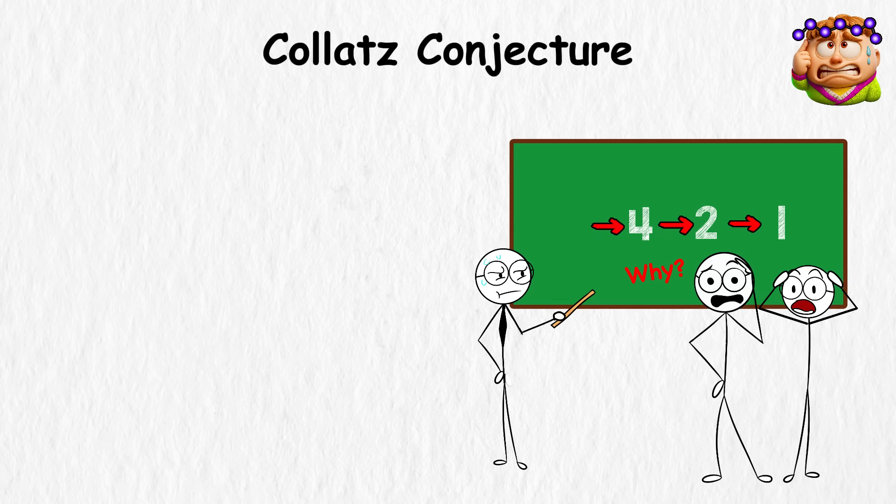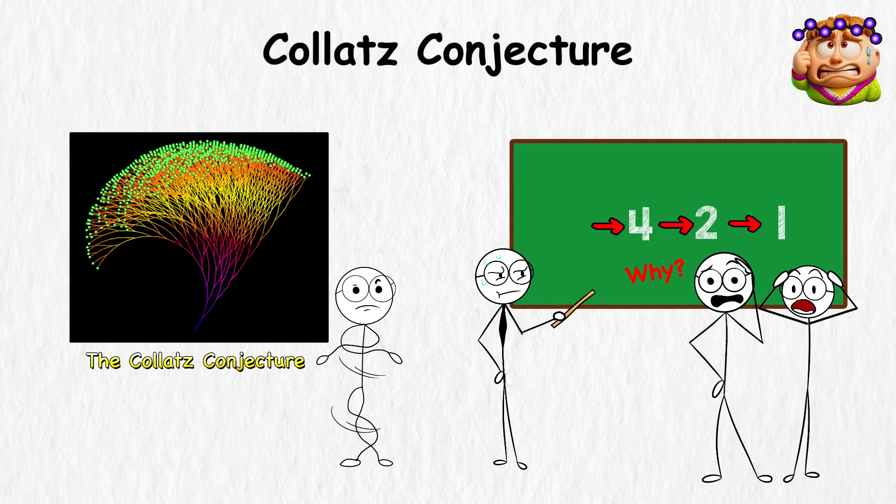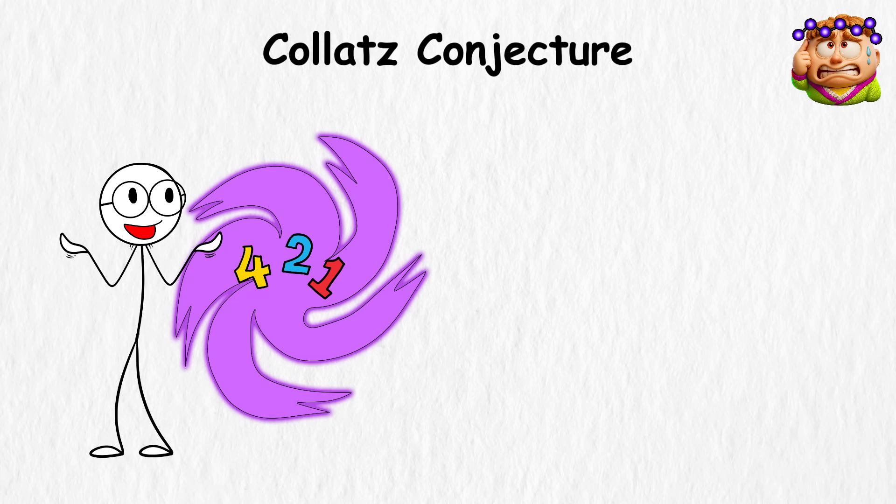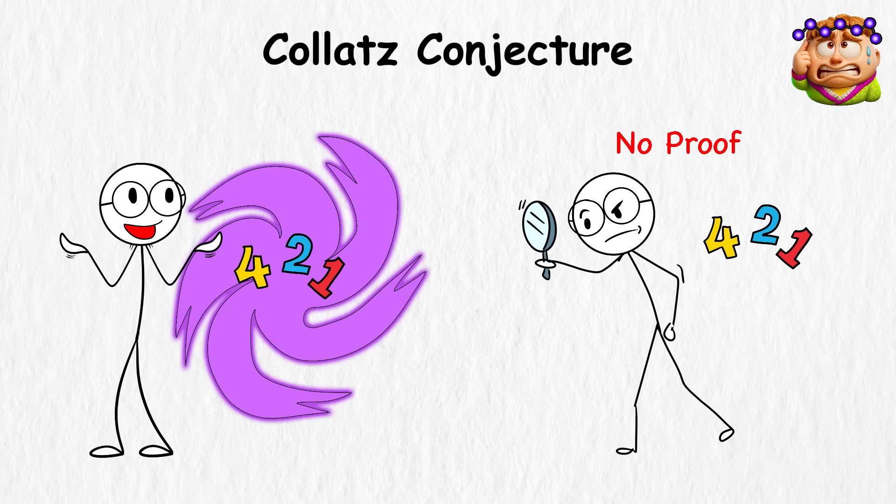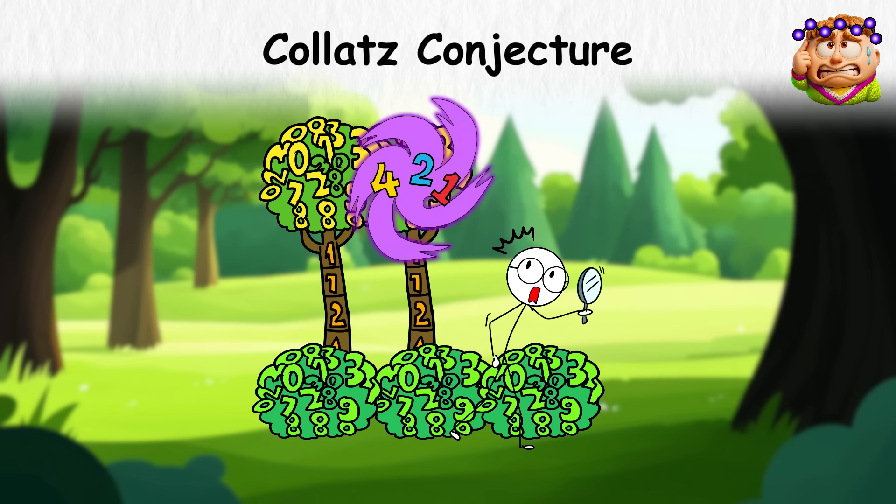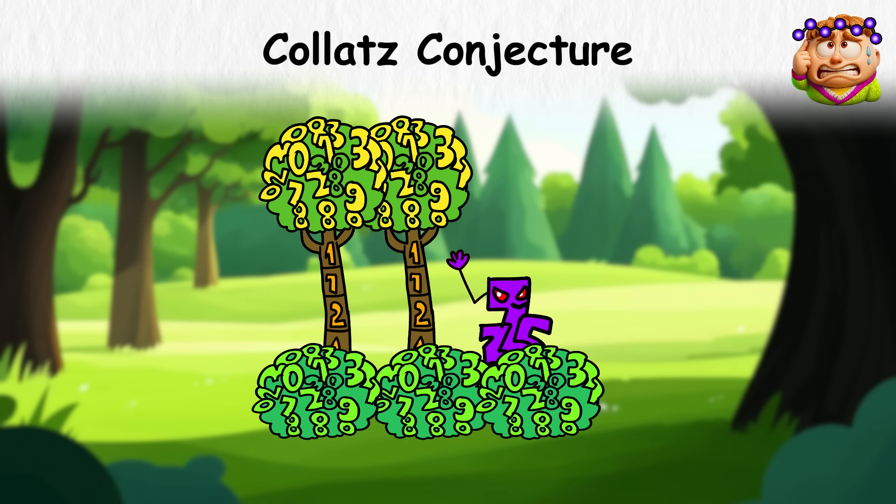And here's the kicker, nobody can prove why. The Collatz conjecture has been around since the 1930s, and despite how easy it is to explain, there's still no proof it always works. It might be that somewhere, hidden in the endless forest of numbers, there's a stubborn one that never falls back.